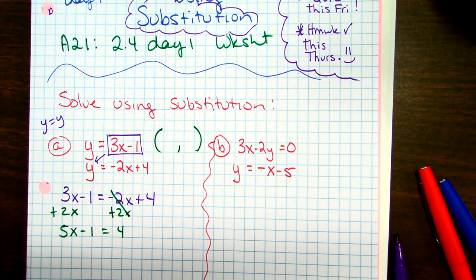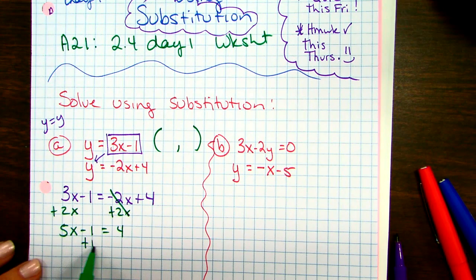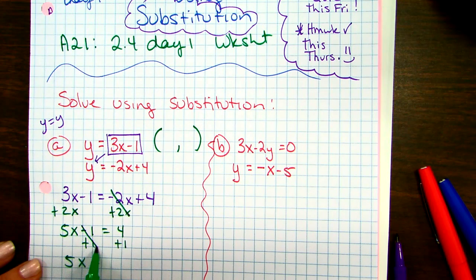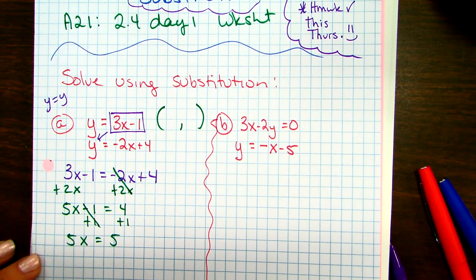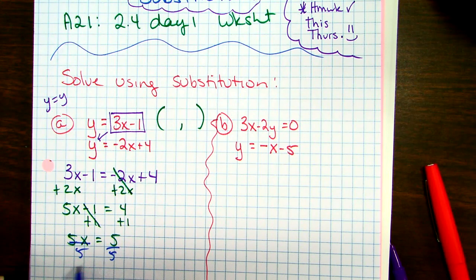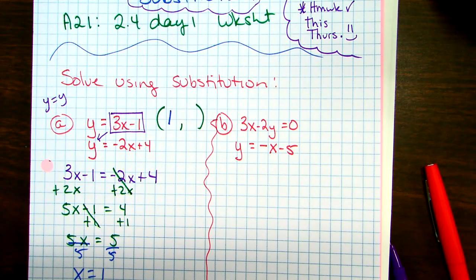Maybe if I say dumb things like that, it'll help you guys remember. So could I have subtracted the 3X from the other side? Of course. It doesn't matter which X's you get together. So I added 2X. Now I'll add the 1. Those cancel. 4 plus 1 is 5. Divide by 5. And X equals 1. There's half my answer.